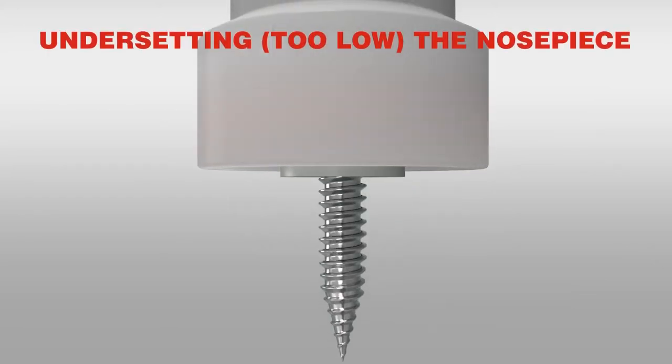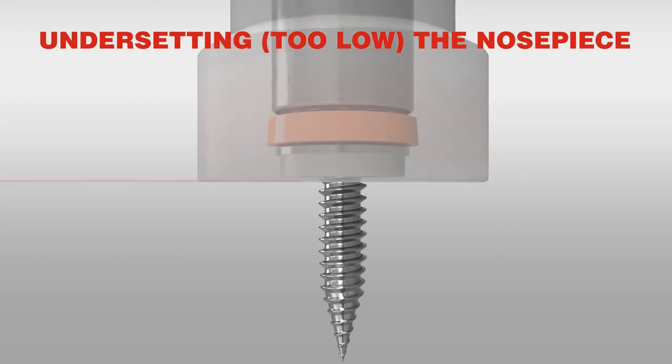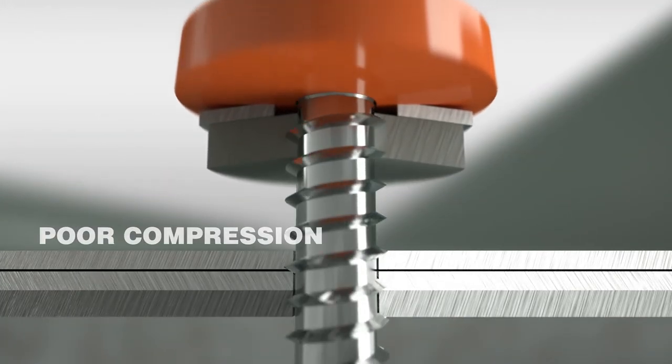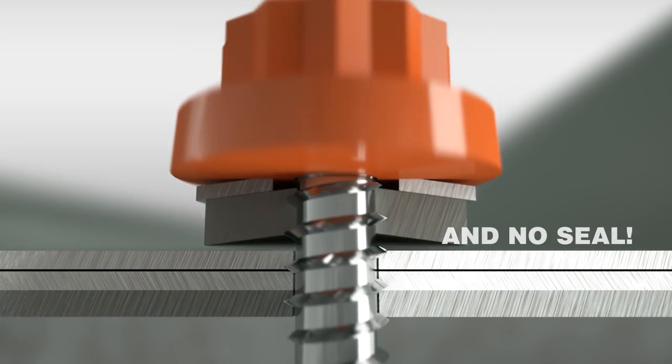Here's a couple more pointers to watch out for when you're looking to achieve the right nose piece setting. Under-setting the nose piece will result in little or no compression of the washer, and that means little or no seal.